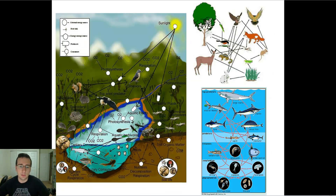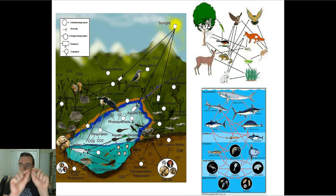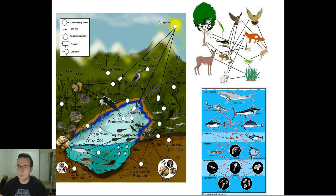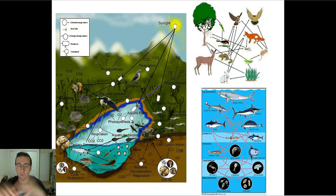A food web looks complex, but basically what it shows is all the food chains in the ecosystem put together. Instead of showing just one direct order of who eats whom, it shows all the animals in the ecosystem and all of their feeding relationships with each other. You can see how complex this can get because sometimes an animal eats more than one other animal.